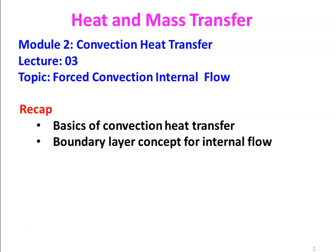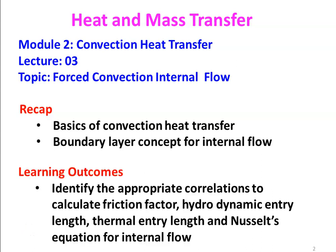In the earlier lecture, we discussed the basics of convection heat transfer. We defined Newton's law of cooling, introduced the boundary layer concept for internal flow, seen the formula for boundary layer thickness, and defined the Reynolds number, Nusselt number, and Prandtl number for convection heat transfer. Today we will discuss forced convection internal flow. There are two types of convection heat transfer: forced convection and free convection. In the subsequent two lectures, we discuss forced convection internal flow, then forced convection external flow and free convection heat transfer.